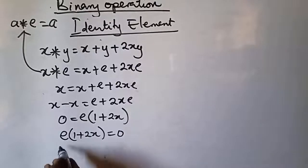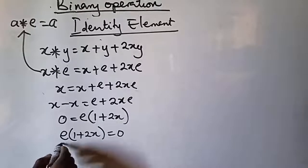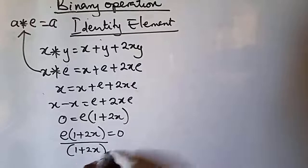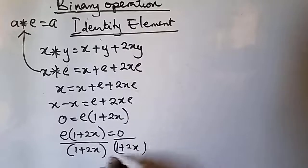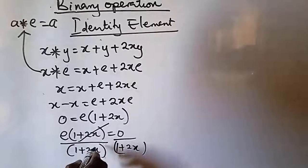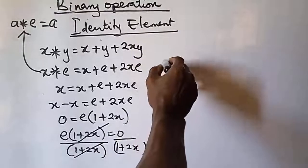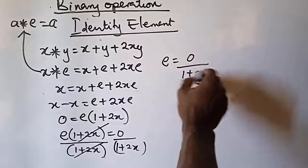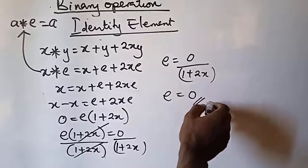So e(1 + 2x) = 0. To make e the subject, we divide both sides by (1 + 2x). This gives e = 0 / (1 + 2x), which means e = 0. The identity element for this operation is 0.